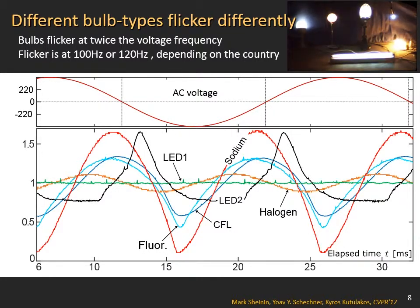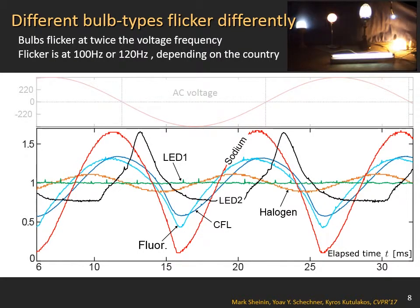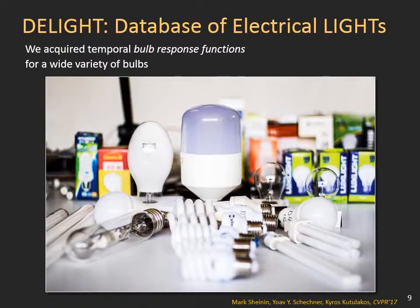The flicker signature of bulbs depends on the bulb type and electronics. Here we show raw measurements of flicker signatures for different bulb types. We call this signature a bulb response function. We compiled a database of bulb response functions for many common bulbs. Our database of electric lights, named Delight, is available online.